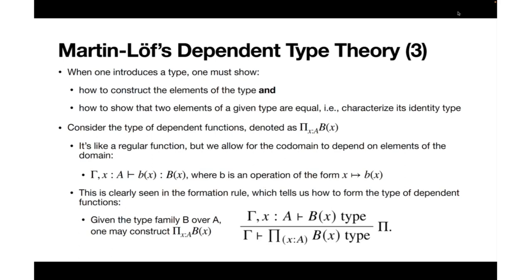In this constructive framework under which Martin-Löf developed dependent type theory, in order to introduce a type one must show two things: first, how to construct an element of the type, and second, how to show that two elements of a given type are equal. This means one needs to characterize its identity type.